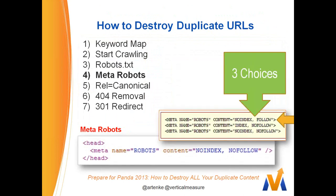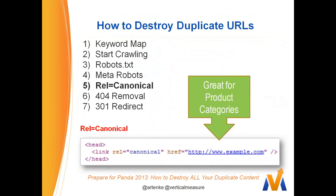Meta robots is what I tend to go to next. I like the meta robots tag because you have three easy choices: no-index follow, index no-follow, or no-index no-follow. I pretty much always use no-index follow — that's going to block the duplicate page but allow the Googlebot to keep crawling the rest of the site. You don't want to stop it in its tracks, unless it's a dev site, staging site, or a complete mirror image site.